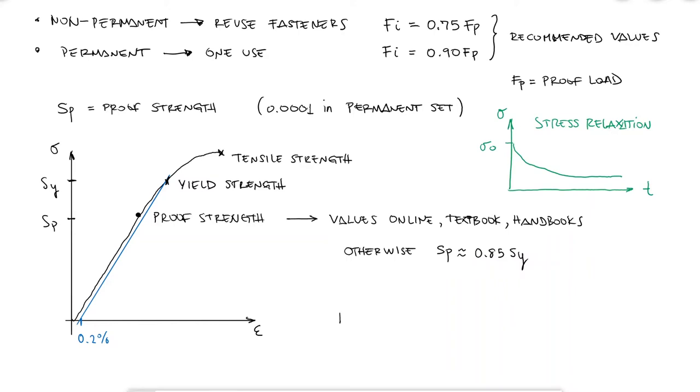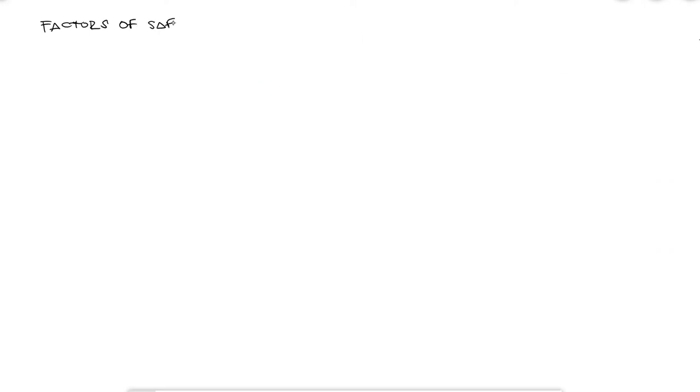This already suggests that the factors of safety will be close to 1. The tensile stress in the bolt can be found by dividing the bolt tension FB over the tensile stress area AT.